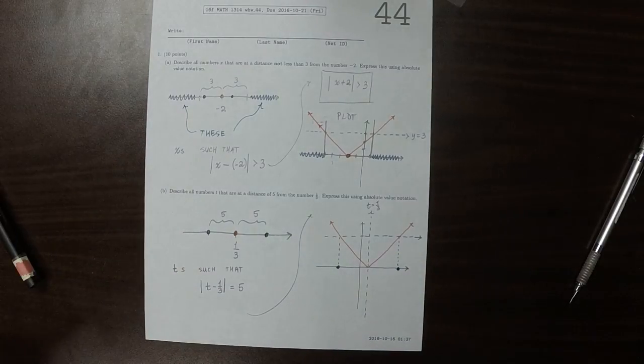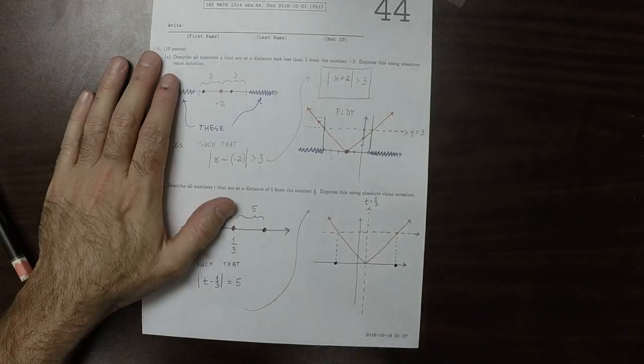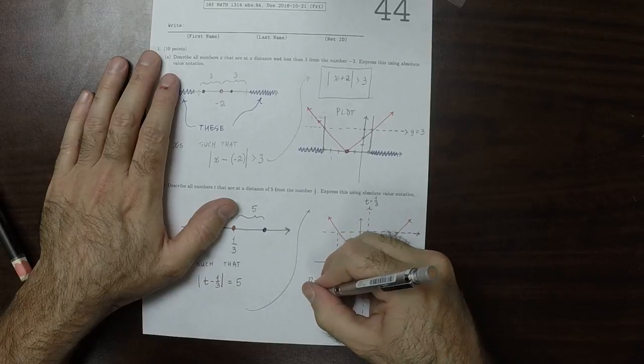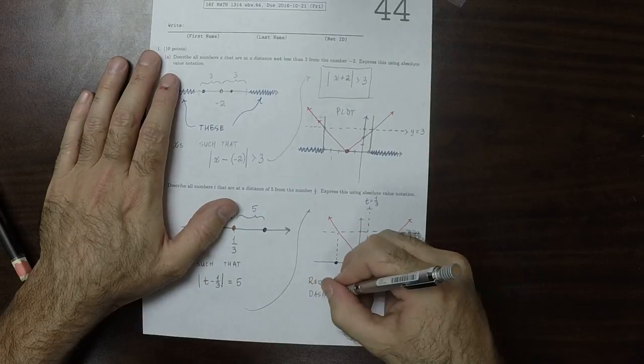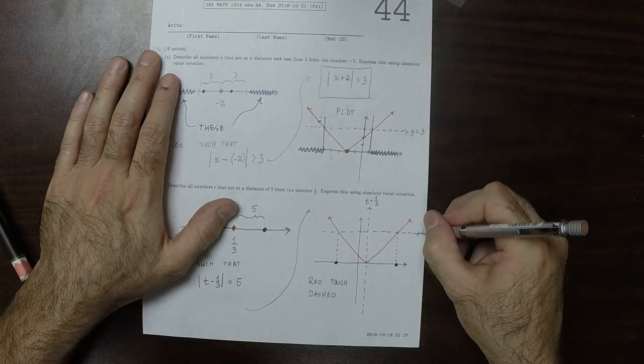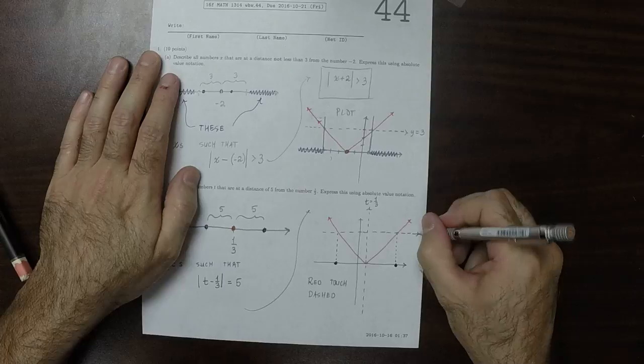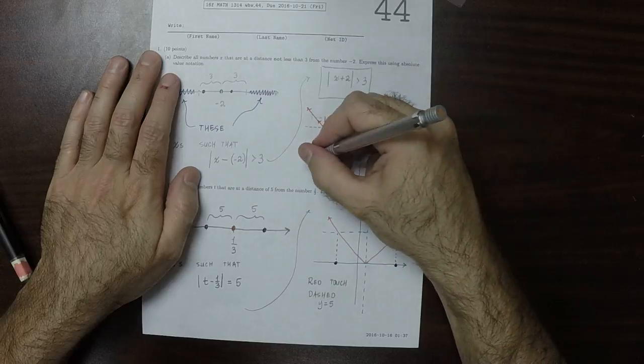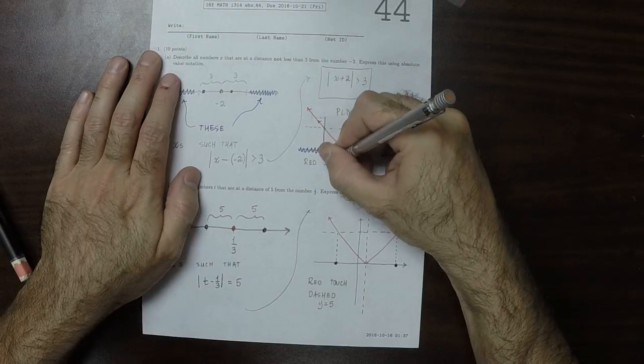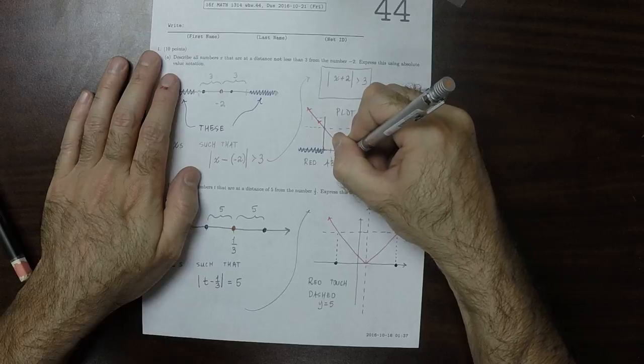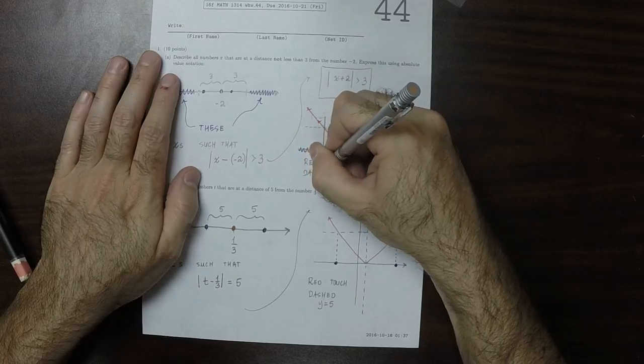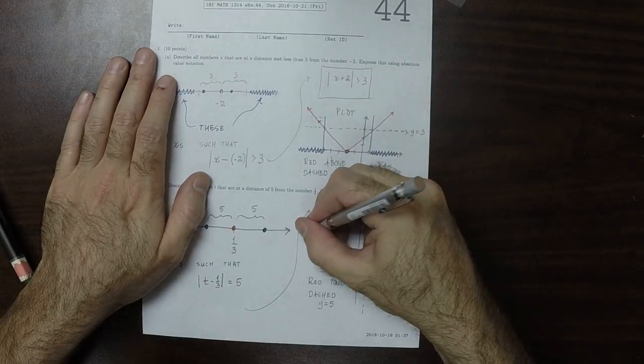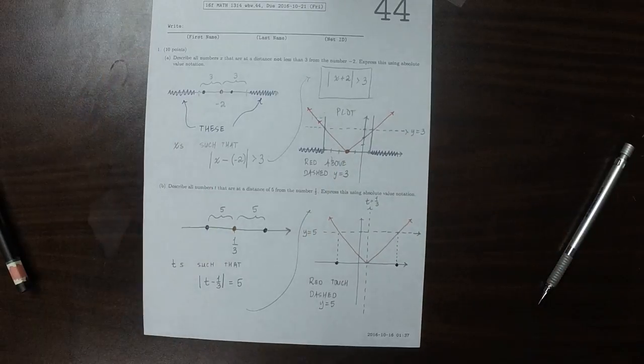So to summarize, these two questions were: where is the red touching the dashed y = 5. And this one was: where is the red above the dashed y = 3. And that's the answer.